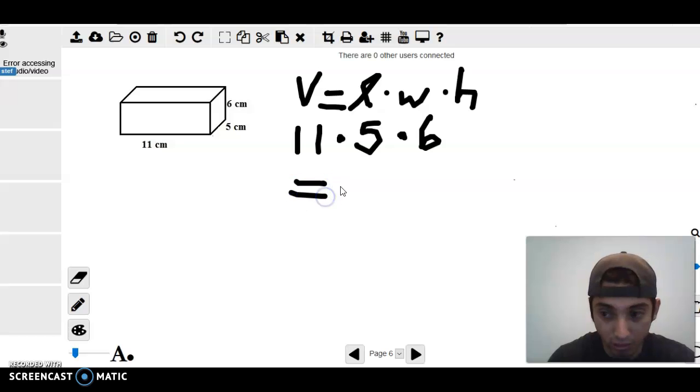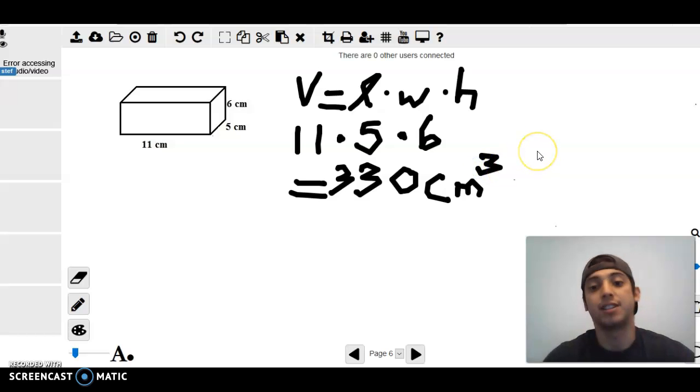And that equals 330 centimeters cubed. Now it's cubed here because we're finding volume. Area is always squared. Volume is always cubed. And there you have it.